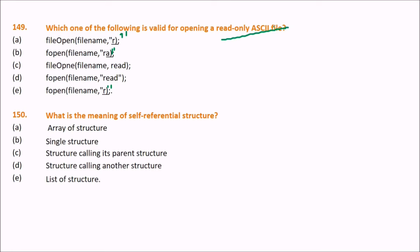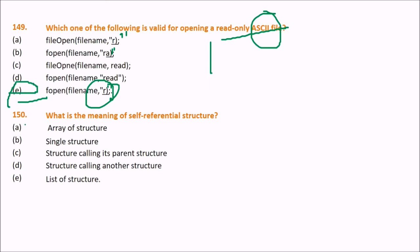For opening a read-only ASCII file, the answer is E: fopen(filename, "r"). Next: what is the meaning of a self-referential structure? The answer is C — the correct option from the choices provided.